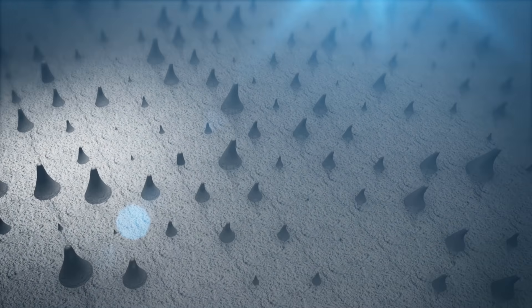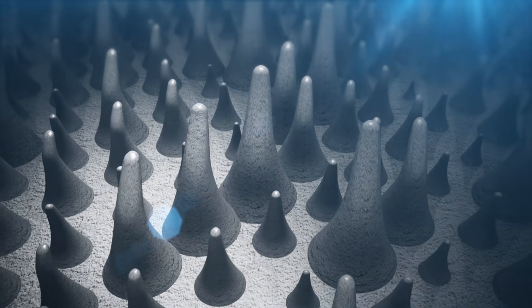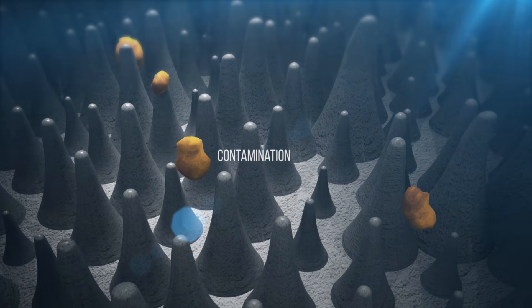By using the revolutionary 3D matrix technology, Ceramic Pro 9H dramatically reduced the surface energy of substrate. So that when liquid comes into contact with it, they form beads and simply roll off.